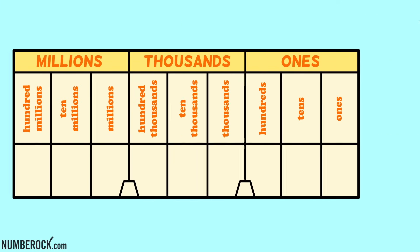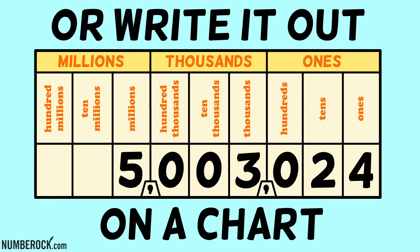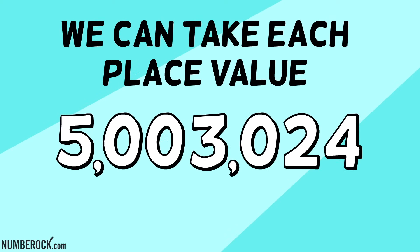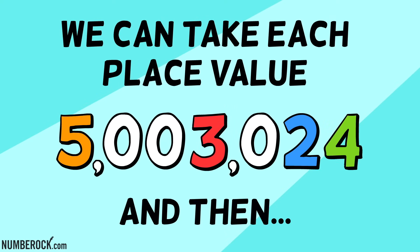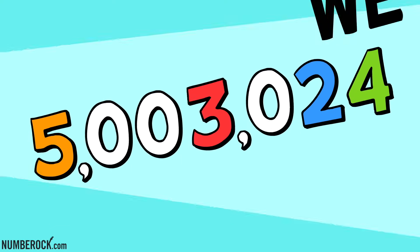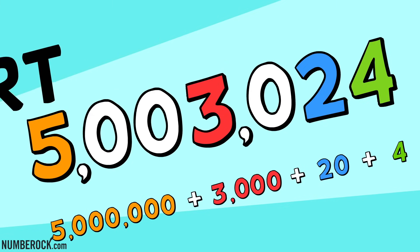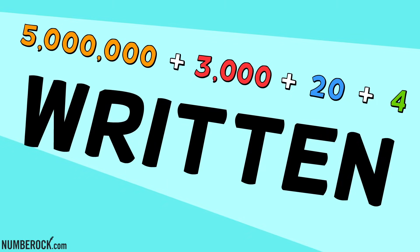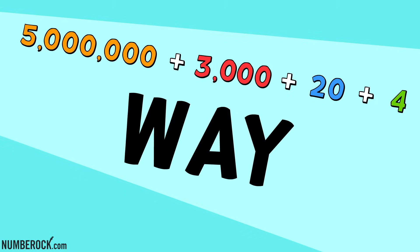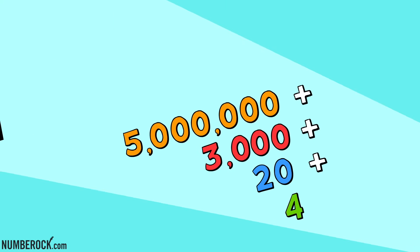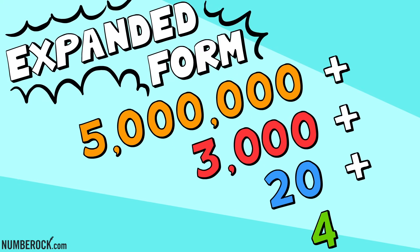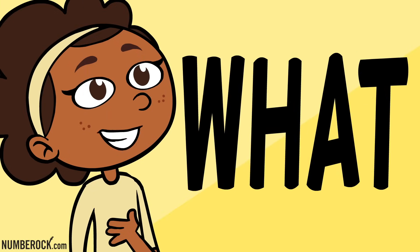Now check it out — we can say your number's name or write it out on a chart. We can take each place value apart, and then we can break it apart. When we want to define numbers written in this way, we've learned the expanded form, so that's what we say.